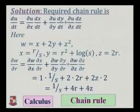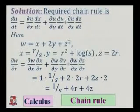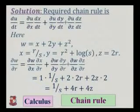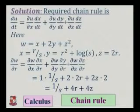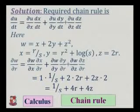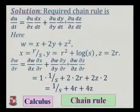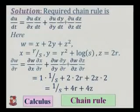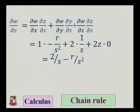The derivative of w with respect to x is 1. Since x equals r by s, del x by del r equals 1 upon s. Del y by del r equals 2r (the derivative of log s with respect to r is 0). The derivative of w with respect to z gives 2z, and del z by del r equals 2. Multiplying through, the answer for del w by del r is 1 by s plus 4r plus 4z.